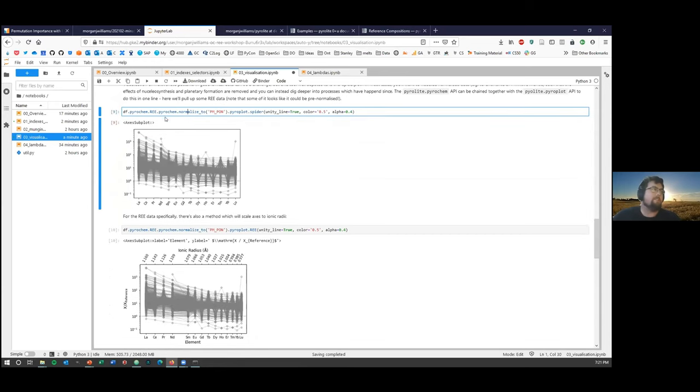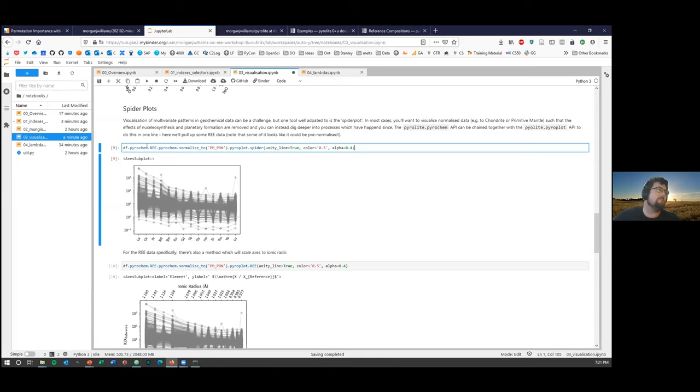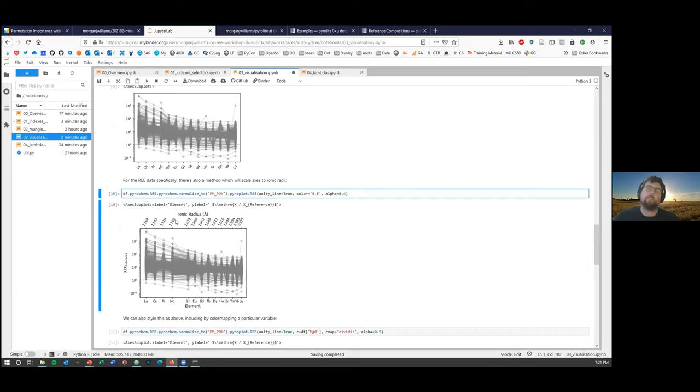Now down to the spider plots, which are a bit more relevant for our rare earths. Here what we're doing is combining the Pyrochem API. So going from our data table here and taking Pyrochem, taking the rare earths out of this data set, and then we want to normalize them to primitive mantle. There's a variety of different reservoirs you can normalize things to. And then again using the Pyroplot API, spitting out a spider diagram. We can see the data coming out of GeoRoc isn't necessarily amazing, and there's a bunch of zigzags back here which may just be pre-normalized data. For the rare earths specifically, there's a spider diagram which is adapted to give spacing of the labels based off the radii. You can switch these axes around to have ionic radius on the x-axis if you wanted to.